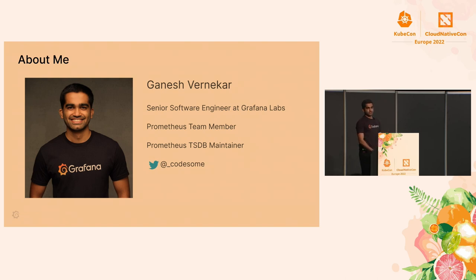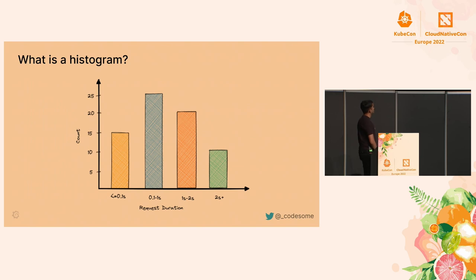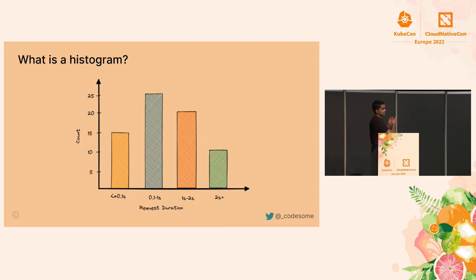Before we talk about the shiny new histograms, let's see what a histogram is. A histogram lets you distribute your observations into multiple buckets. In all my examples, I'm going to observe the latency of a request. On the y-axis it's the number of requests, and on the x-axis it's the request duration.